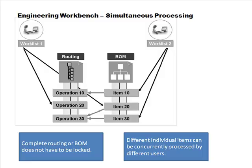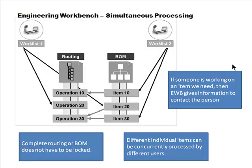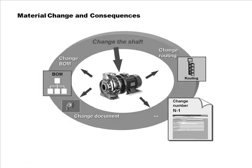Different individual items can be concurrently processed by different users. In this diagram, one user is working on part of the routing and part of the BOM simultaneously, while another user is working on different parts of the same BOM and routing. Additionally, if you try to access an object that's locked, the system gives you contact information as to who currently holds that lock.